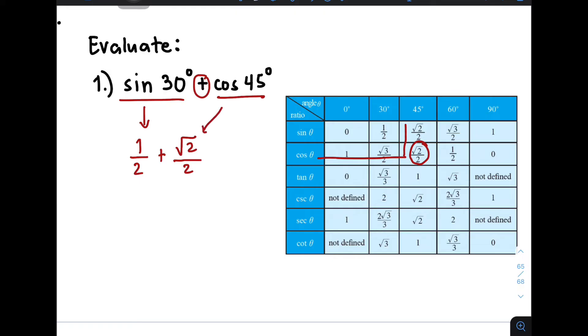Now, what we need to do here is to simplify this fraction. As you can see, they have the same denominator, so we can easily copy the denominator 2 and then add the numerator 1 plus square root of 2. And to add them, our sum is equal to 1 plus the square root of 2. And this is the value of the given expression, sine 30 degrees plus cosine 45 degrees.